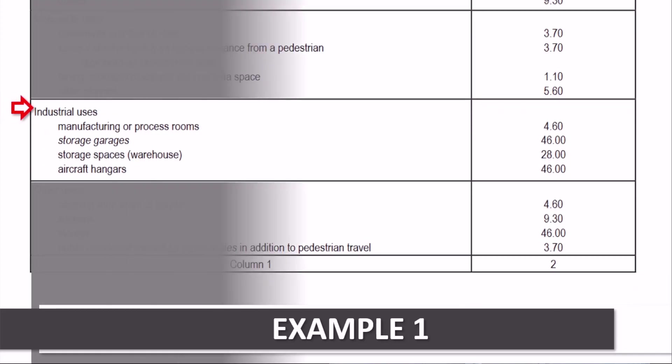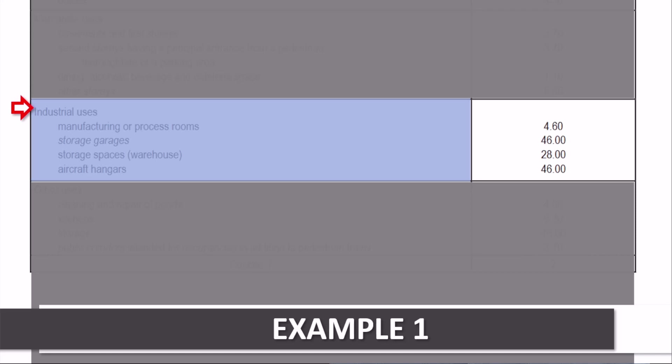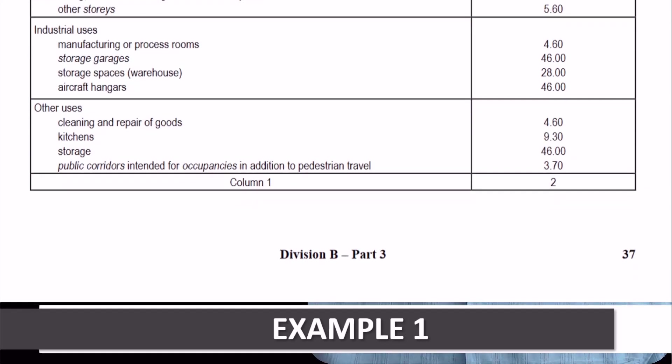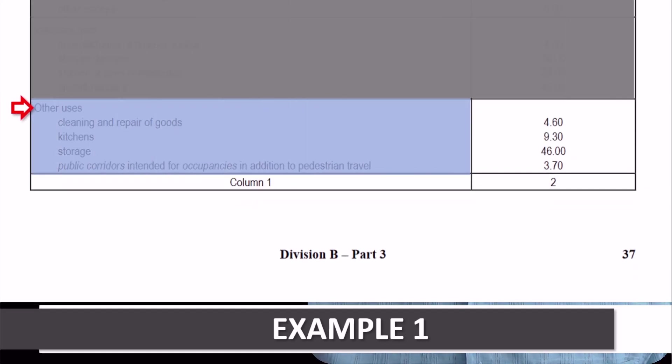Next, are mercantile, which are the E occupancies. And then, we have industrial, which are F1, F2, and F3 occupancies. Finally, at the very bottom is Other. You use Other only if the building you are analyzing cannot be identified by anything else in the table.